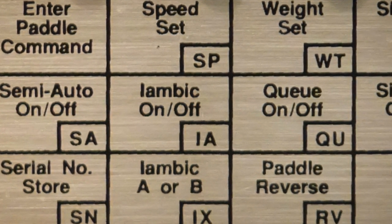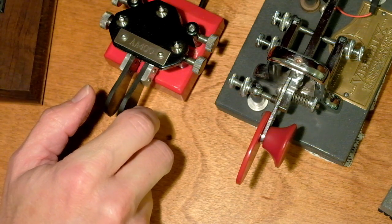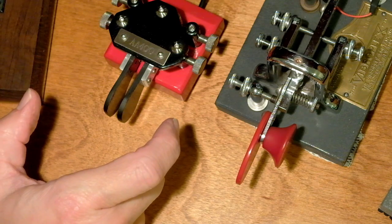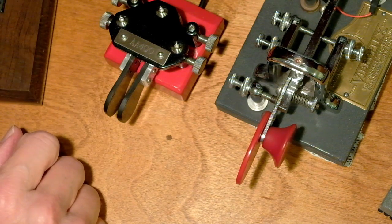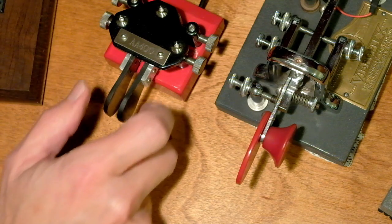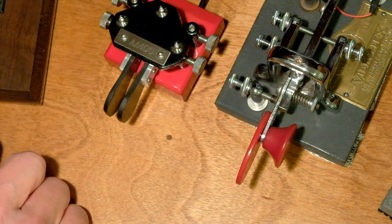The differences only occur when you squeeze both paddles together and let go simultaneously, let go at the same time. At no other time does mode A or mode B make a difference. It's only when you squeeze the keys and let go of them together.